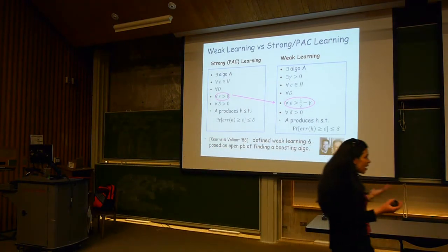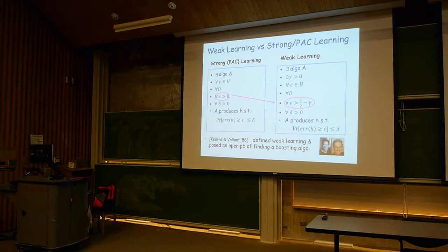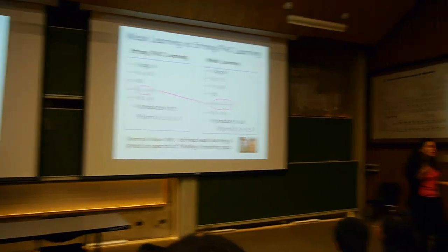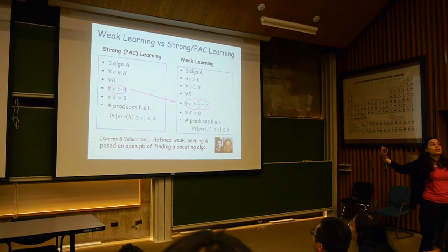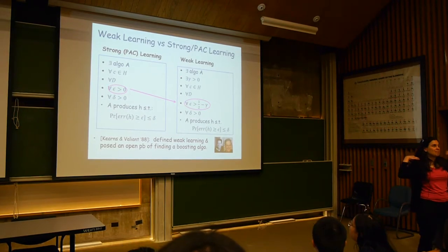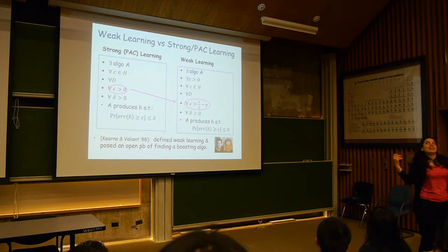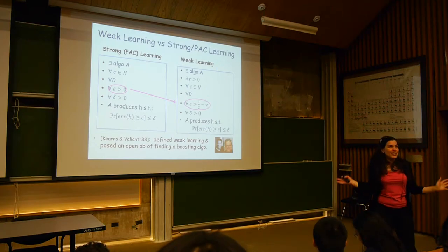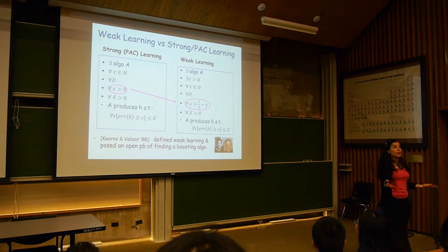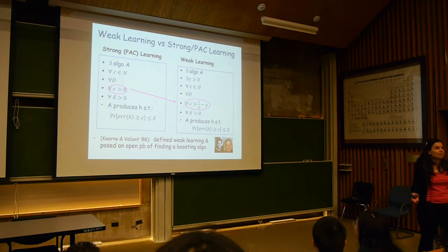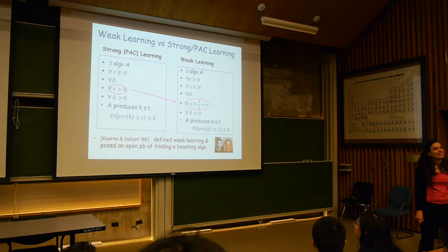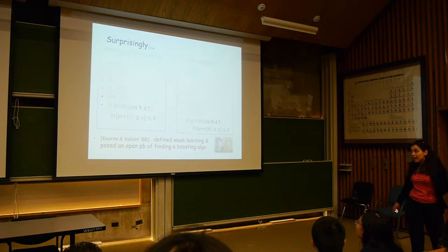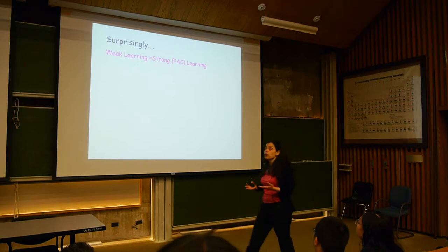Michael Kearns and Les Valiant then asked: is weak learning equivalent to strong learning? Somehow, if I have a weak learning procedure, can I be smart and turn it into a strong learning procedure? Sounds like a super interesting question, and they were not able to answer it immediately — these are stars of the field, Les Valiant is a Turing Award winner and Michael Kearns is one of the star researchers in computer science. Surprisingly, it turns out the answer is yes — weak learning is equivalent to strong learning.